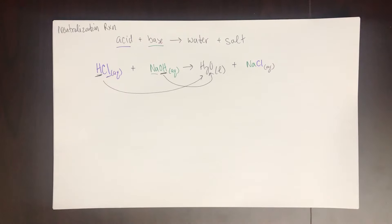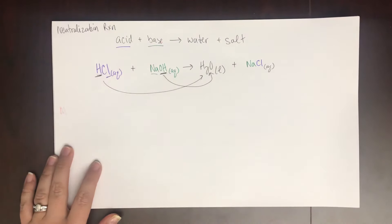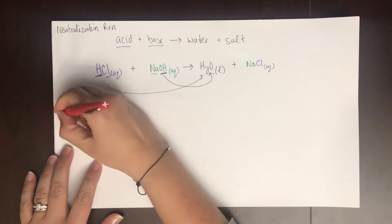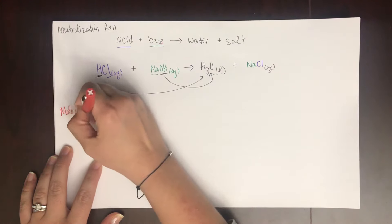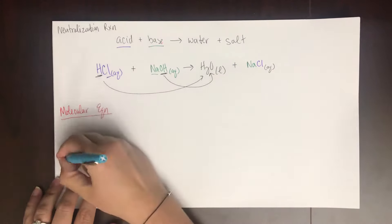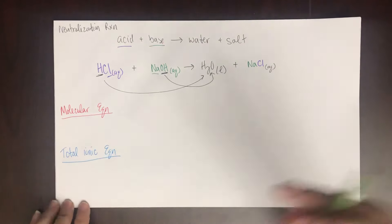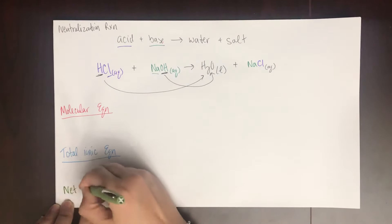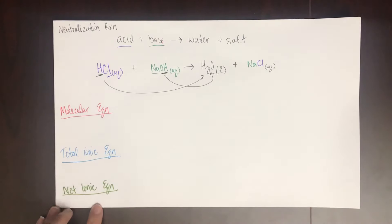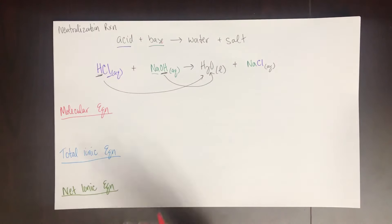and do another example of a molecular equation, a total ionic equation, and a net ionic equation. The molecular equation is just a balanced chemical equation with the correct phases, which is what we already have. It's already balanced. We just have one of everything.